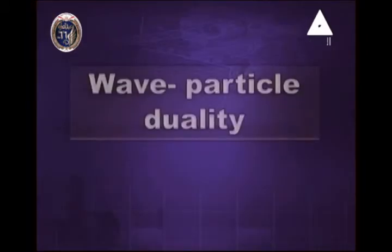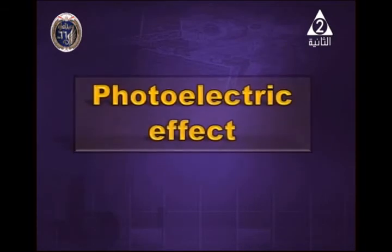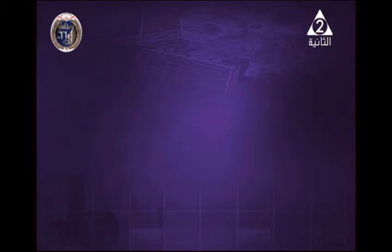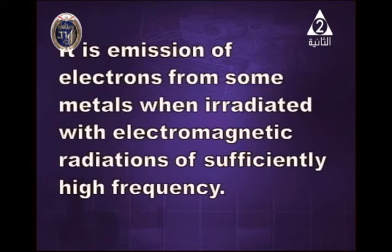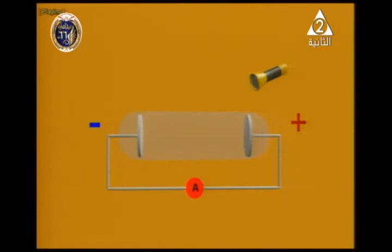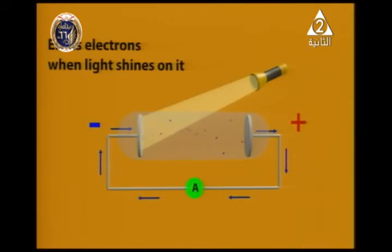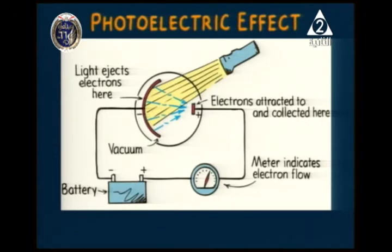Photoelectric effect or photoelectricity — what's meant by photoelectric effect? It is emission of electrons from some metals when irradiated with electromagnetic radiations of sufficiently high frequency. Let me say the definition once again: it is emission of electrons from the surface of some metals when irradiated with electromagnetic radiations. These radiations should have sufficiently high frequency — you should focus on this expression: sufficiently high frequency.